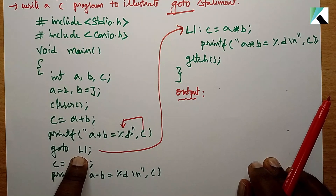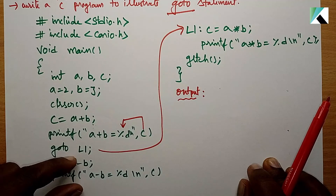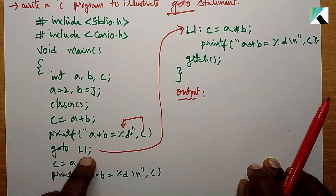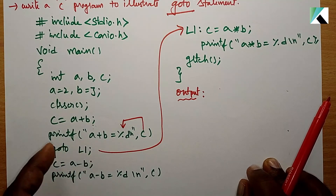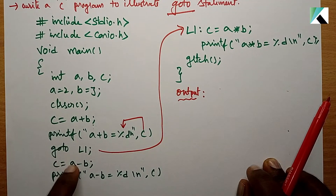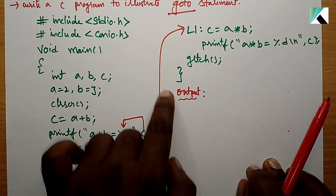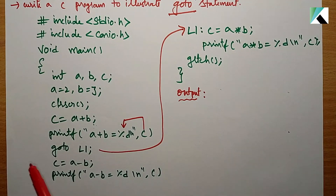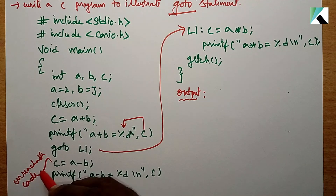Every time goto L1 executes, control goes to label L1. If no condition is given, every time control goes to L1 — the subtraction logic or any code between the goto and L1 is never reached. This is called unreachable code.